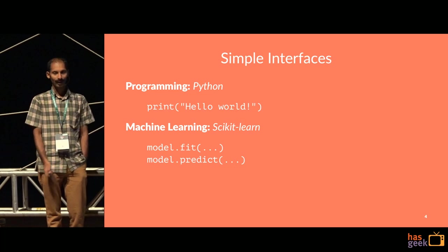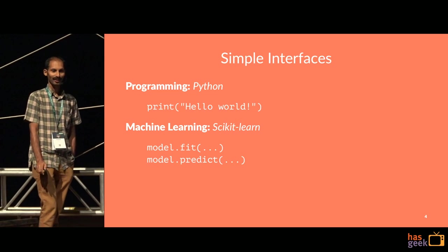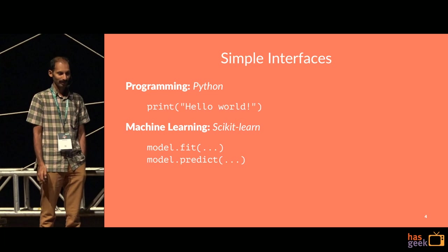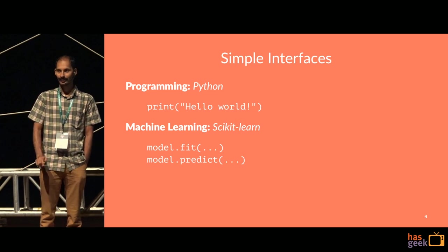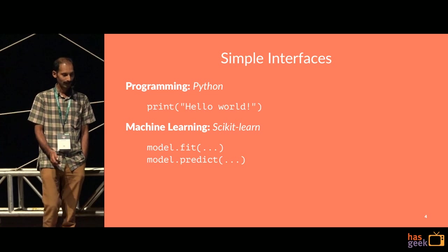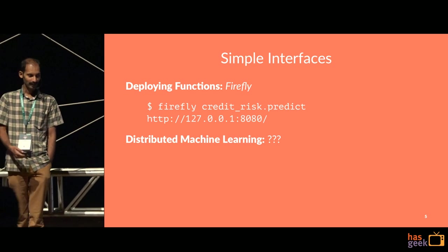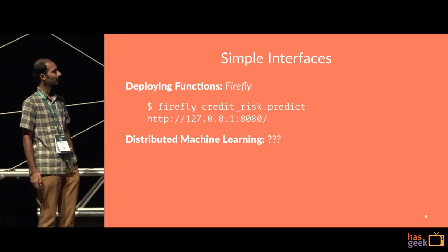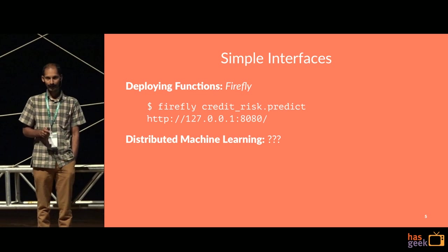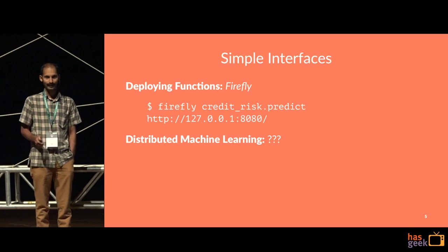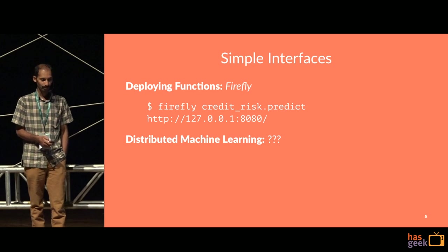I really love simple interfaces. For example, in Python you just write 'hello world' — that's all you need. With scikit-learn for machine learning, you take any model, call fit and predict, and you get the prediction out. Now, how do you deploy machine learning models? We couldn't find anything simple, so we built a small tool called Firefly. You take your Python module and function name, say Firefly that, and it starts running a REST API you can use externally. It's an open source tool we built recently.